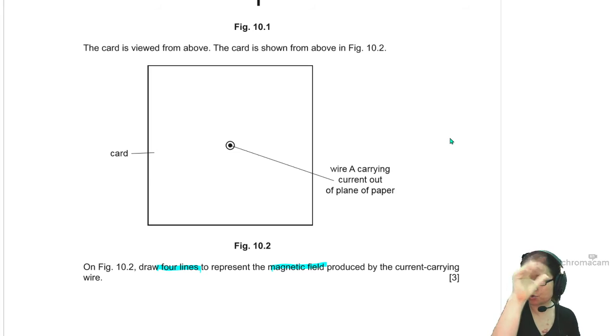So we use the right hand grip rule. The thumb is pointing out of the paper, your fingers are curling counterclockwise. But some tips for you: number one, the field is stronger when closer. So your circles should be concentric.